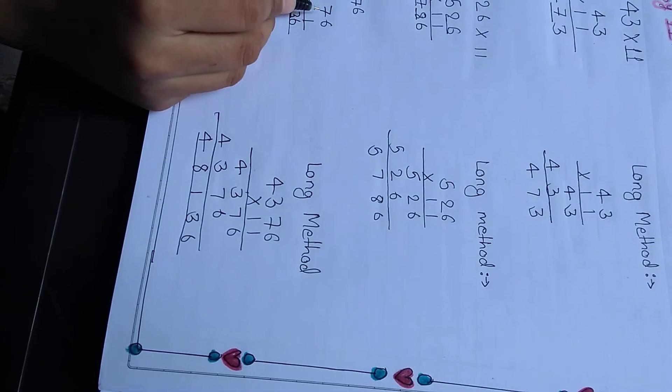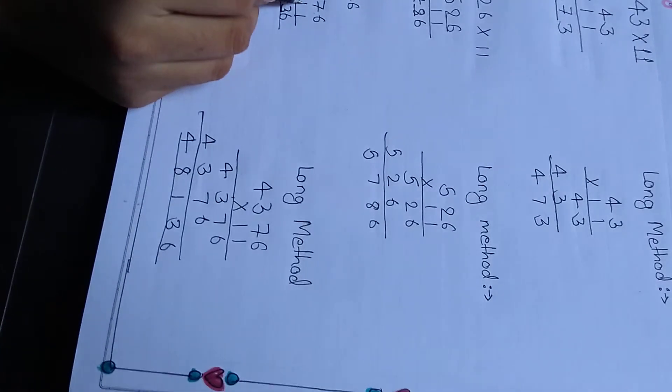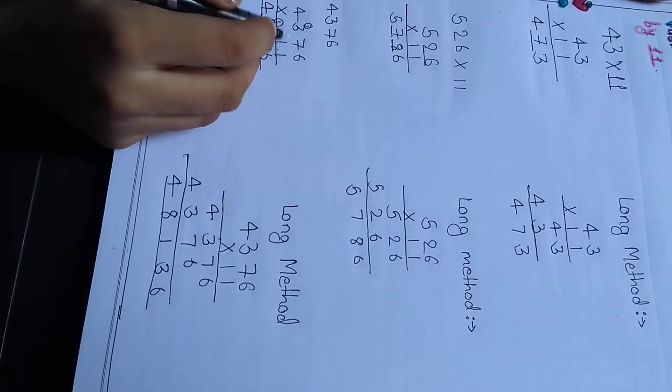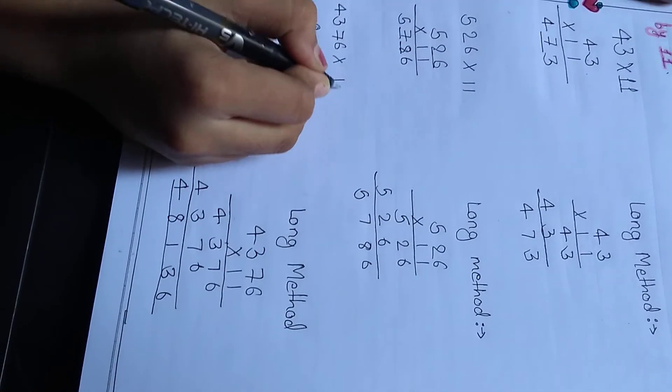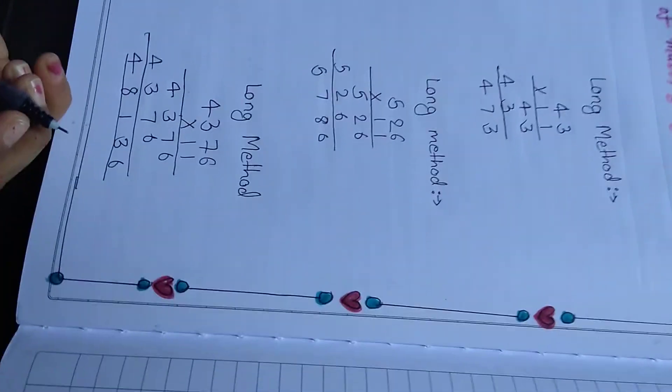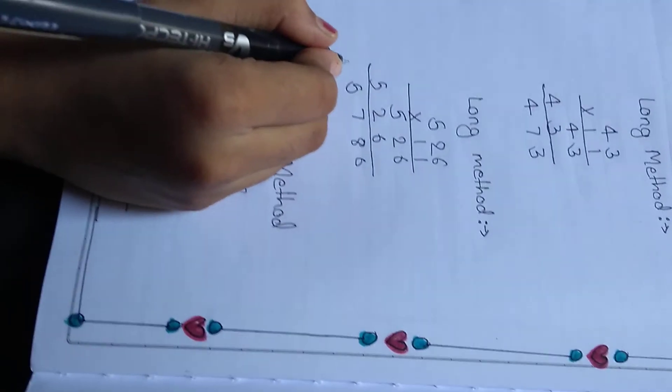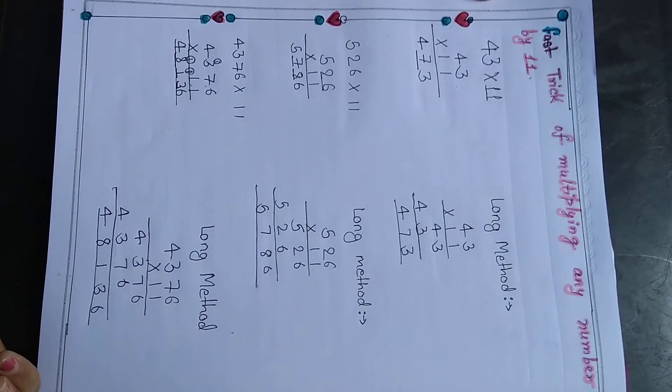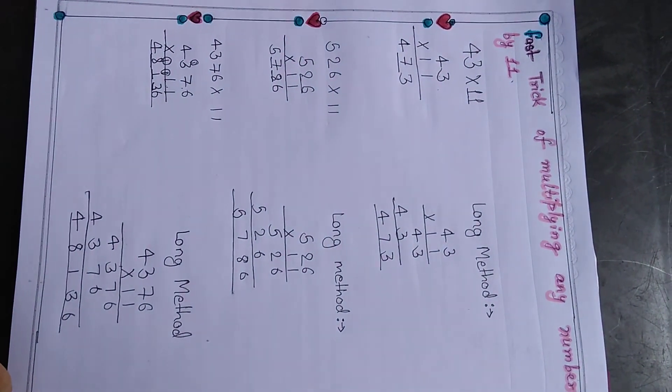So 4376 multiplied by 11. We draw a line here also. So we can use the simple trick instead of the long method.